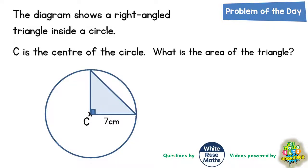Welcome, problem-solving fans, to another problem of the day. This one is about a right-angle triangle inside a circle. C is the centre of the circle, and we're being asked to find the area of the triangle.